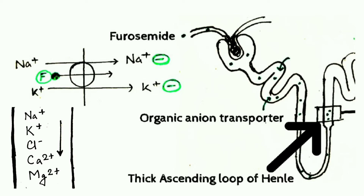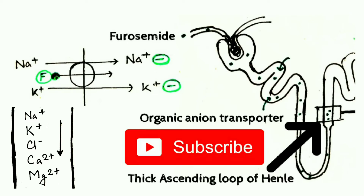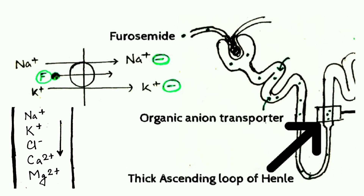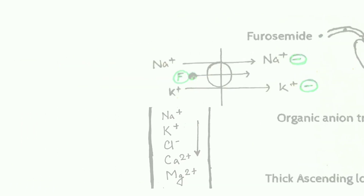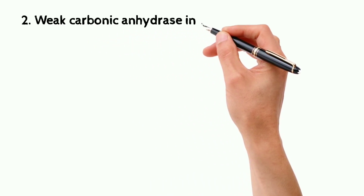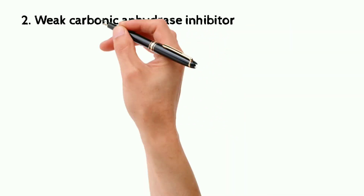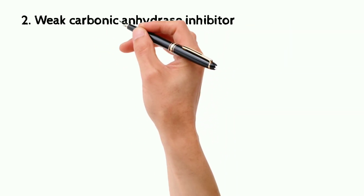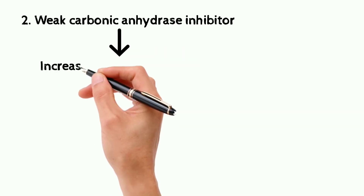They retain water in the tubule. In contrast to thiazide, in the case of furosemide, calcium ion excretion is increased in the urine — the loop loses calcium — and in the blood, calcium ion is decreased with furosemide but increased with thiazide.